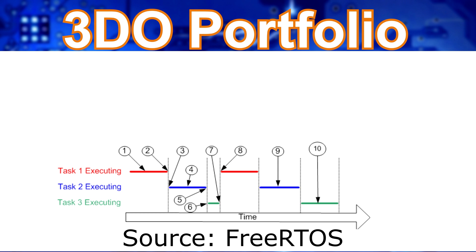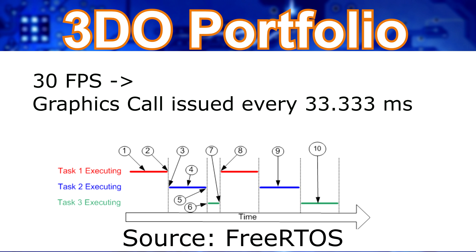These threads are assigned priorities, and the thread with the highest priority will always trump all the ones lower than it. With this preemptive model, consider examples in video games where this would be helpful. When designing a game on the 3DO targeting 30 frames per second, every 33.333 milliseconds some data needs to be sent to the video hardware — to the frame buffer — in order to be displayed on screen.